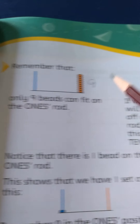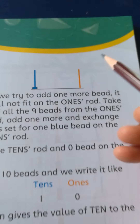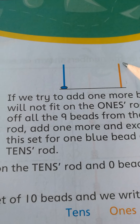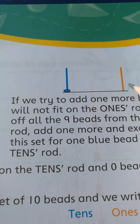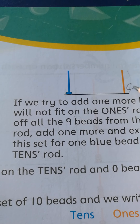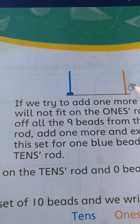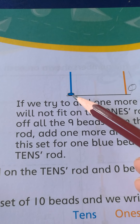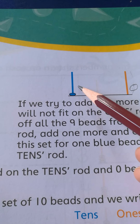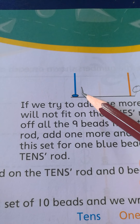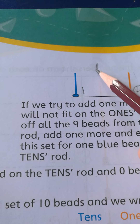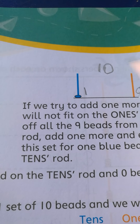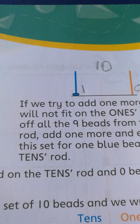If we come here and see that the orange line is for ones — there are no beads, so we have zero beads. The blue line is for tens, and here we have one bead. So our number is 10. We get the number 10.